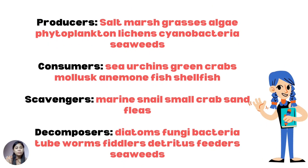These are the answers. For producers: salt marsh grasses, algae, phytoplankton, lichens, cyanobacteria, and seaweeds. For consumers: sea urchins, green crabs, mollusk, anemone, fish, and saltfish. For scavengers: marine snail, small crab, and sandflies. And for decomposers: diatoms, fungi, bacteria, tube worms, feeders, and detritus feeders.